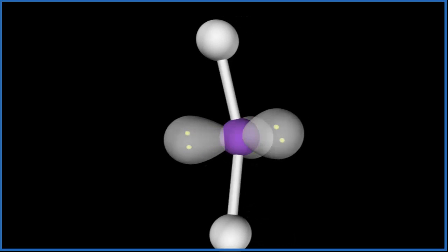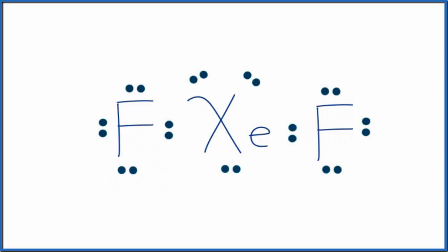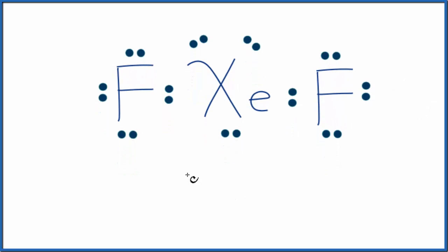Let's go back to our Lewis structure here. So if you couldn't visualize the molecular geometry just by looking at the Lewis structure, you could also use something that's called the AXE notation. So A, that's the central atom - that's the xenon. X, that's the number of atoms bonded to the central atom - we have two fluorine atoms. And then E, that's the number of lone pairs.